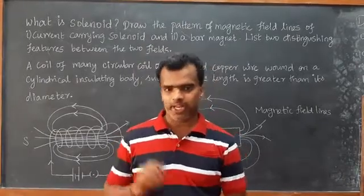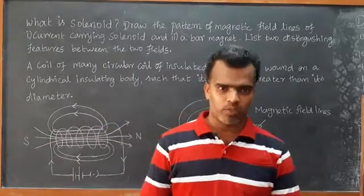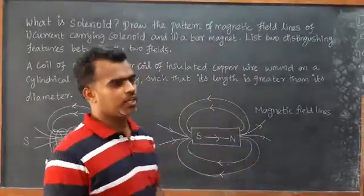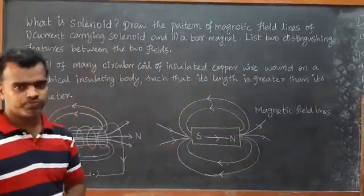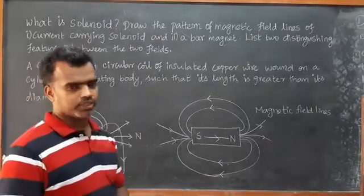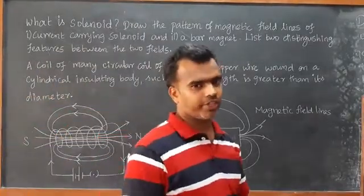Now I will answer your question. A coil has a number of turns. The number of turns is made of an insulated wire.